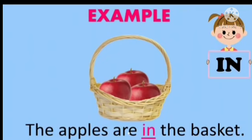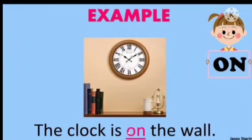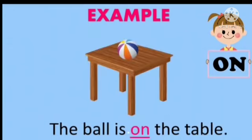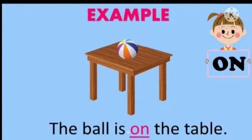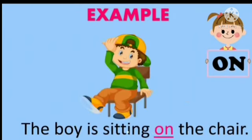Now let's move on to 'on.' The clock is on the wall — where is the clock? It's on the wall. The ball is on the table — where is the ball? On the table. Here 'on' is a preposition used to identify the position of the thing, that is the ball. The boy is sitting on the chair.